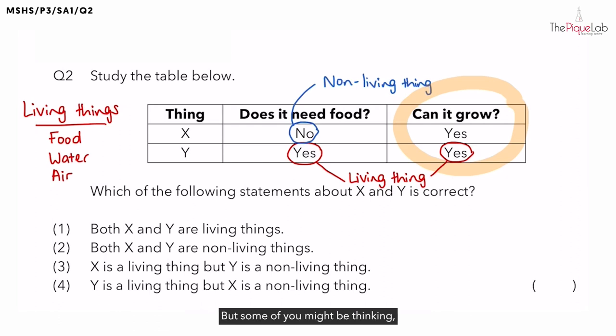But some of you might be thinking, why is it that X can grow as well? Does it mean that X is a living thing? Now, I want you to think about a balloon. What happens when you blow air into a balloon? The balloon would inflate, correct? And what if I want the balloon to be even bigger? That means I just have to blow more air into the balloon. So, as we blow more and more air into the balloon, the balloon becomes bigger in size or it is growing. But does it mean that the balloon is a living thing? No, the balloon is a non-living thing which can grow.